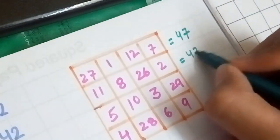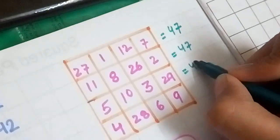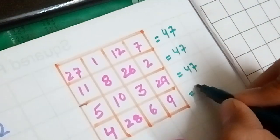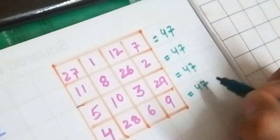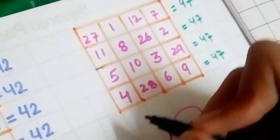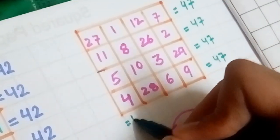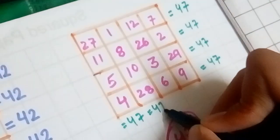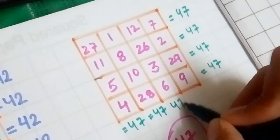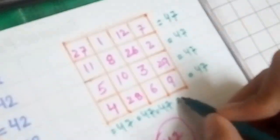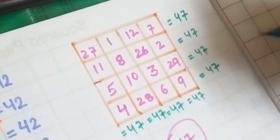Now if you add up vertically, you get 47, here also 47, same here 47, and here also 47.